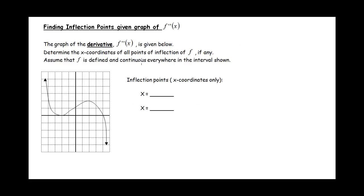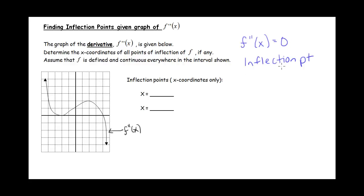Let's look at this example where we're finding the inflection points given the graph of the second derivative. Remember, inflection points occur where the second derivative is zero — usually, though not always. Since this graph is of our second derivative, we're looking for where the y value is zero, meaning we're looking for the x-intercepts. We have one at x equals 4 and a second one at x equals negative 2.